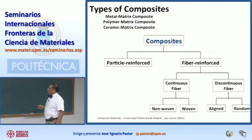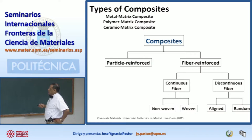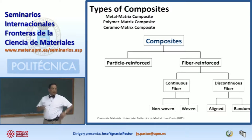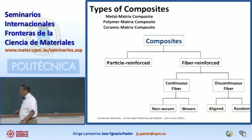Those are examples of continuous fibers — fibers that have very long aspect ratios. You can have them woven or non-woven. These continuous fibers can be aligned or randomly distributed in the material.